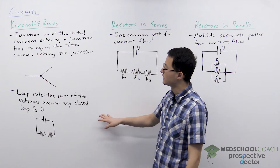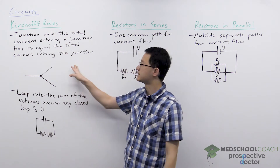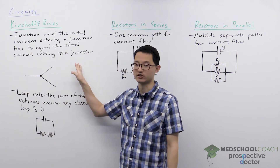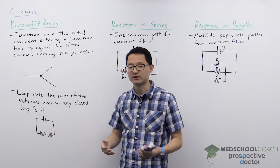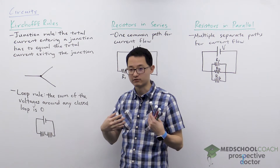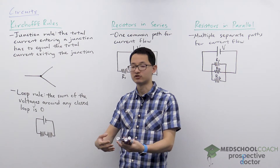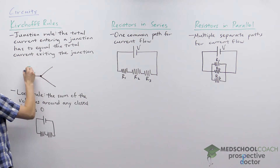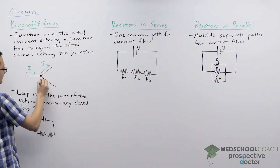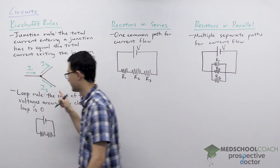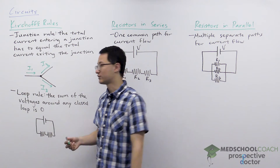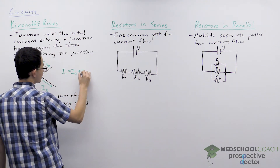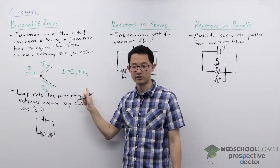There are two rules. The first is the junction rule. The junction rule states that the total current entering a junction has to equal the total current exiting that junction. So essentially it's a version of conservation of charge — however much charge enters the junction has to be the same amount that exits. For instance, if I1 is current entering and I2 and I3 are currents exiting, then I1 equals I2 plus I3 according to the junction rule.